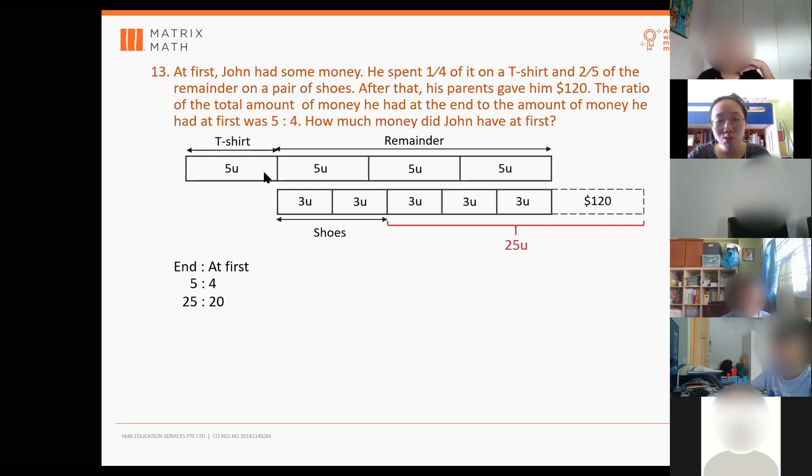So when they say what he has at first, you just focus on the top layer model. The bottom layer is just what I redraw the remainder, and it doesn't include the 120, correct? Because what he has at first is only this 20 units here.